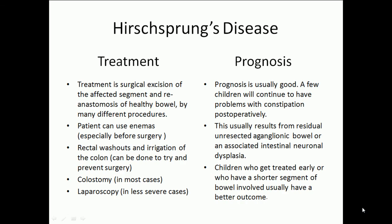Treatment options include surgical excision of the affected segment and re-anastomosis of healthy bowel by various procedures. Patients can use enemas, especially before surgery. Rectal washouts and irrigation of the colon can be done to try and prevent surgery. Prognosis is usually good, though a few children will continue to have problems with constipation post-operatively, usually resulting from residual unresected aganglionic bowel or an associated intestinal neuronal dysplasia.